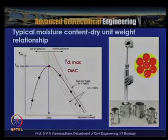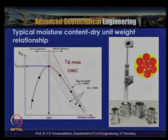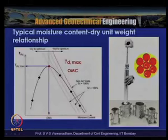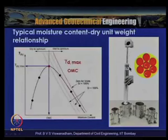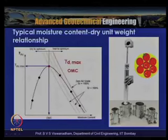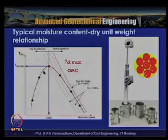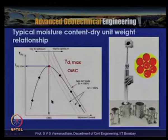The compaction is carried out by dropping a 2.5 kg hammer at a drop height of 0.305 m to ensure the soil is compacted uniformly throughout the mould. Upon increasing water content beyond the optimum moisture content, the same soil mass experiences a decrease in dry unit weight.